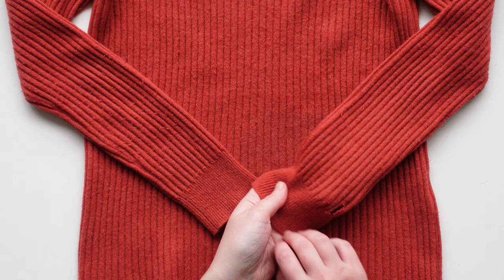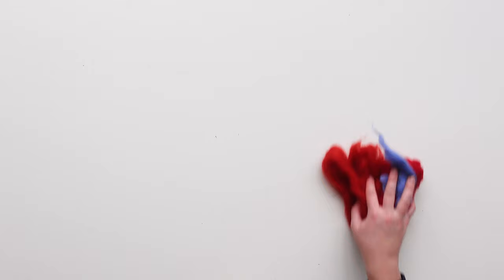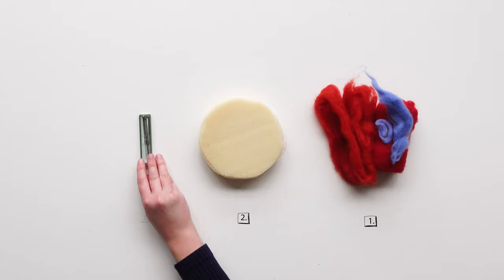So this loved cashmere sweater was also loved by moths, and a way to repair the moth hole is with the technique needle felting. To do that we need woolen fibers, a brush or something soft so the needle won't break.